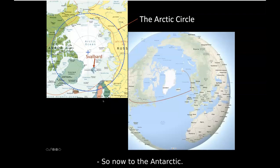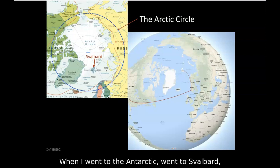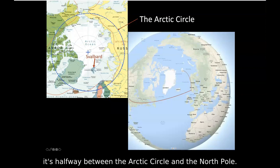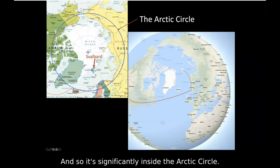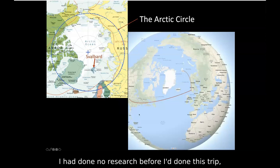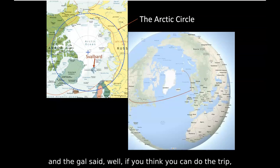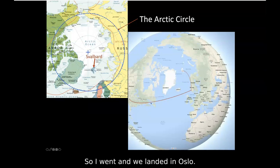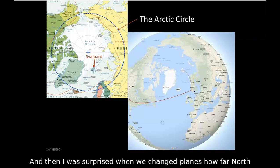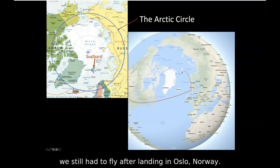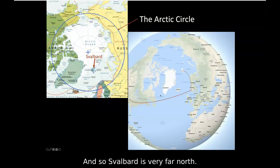Now to the Arctic. When I went to Svalbard — which is halfway between the Arctic Circle and the North Pole, significantly inside the Arctic Circle — I had done no research beforehand. I'd just gotten back from Borneo where I had hurt my knee badly. The organizer said if you think you can do the trip and can't get off the boat, come anyway. We landed in Oslo and then I was surprised how far north we still had to fly — Svalbard is very far north.